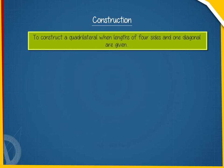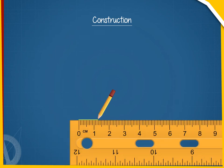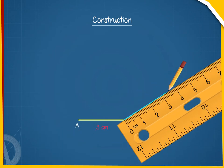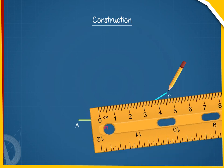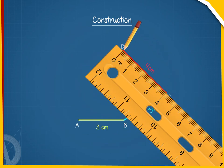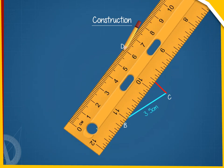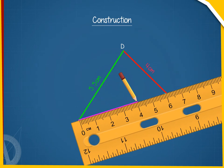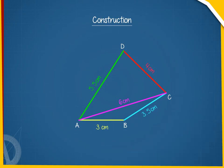Let us construct a quadrilateral ABCD in which AB equals 3 cm, BC equals 3.5 cm, CD equals 4 cm, DA equals 5.5 cm, and the diagonal AC equals 6 cm. A rough sketch will help us in visualizing the quadrilateral.